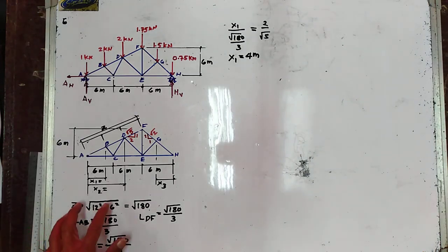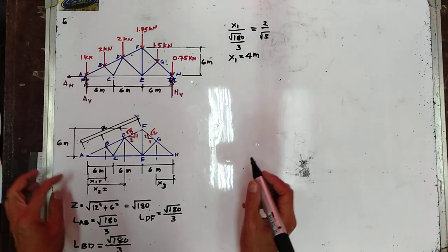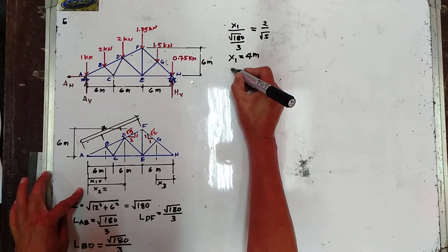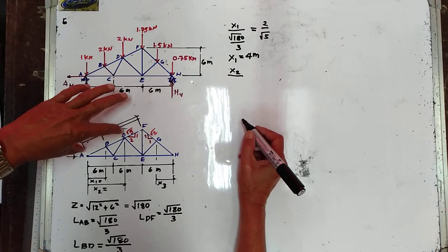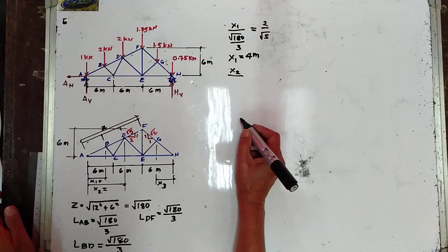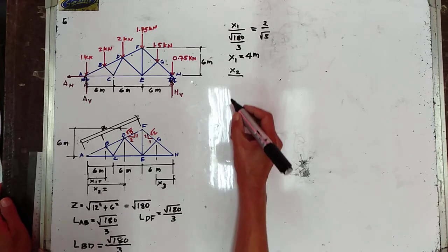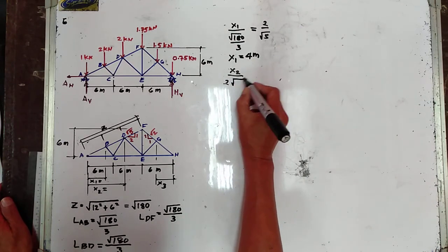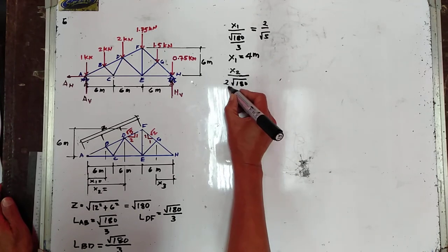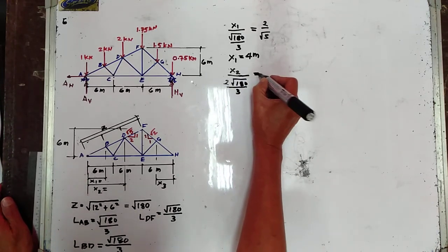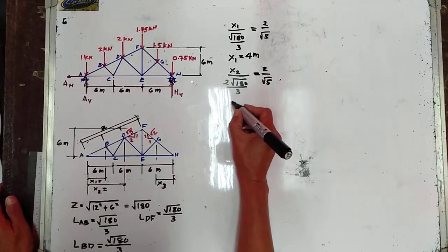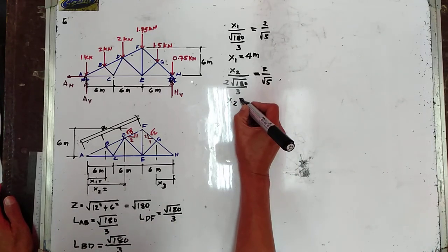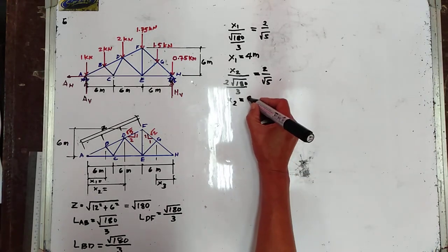Now let us determine X2. Using ratio and proportion, X2 over length ABD equals 2 over the square root of 5, where length ABD equals 2 times the square root of 180 over 3. So the value of X2 is equal to 8 meters.